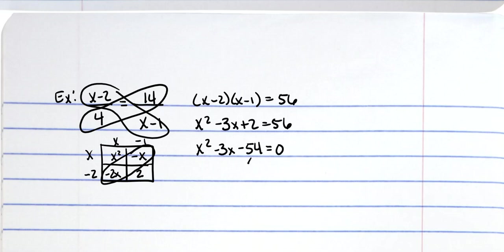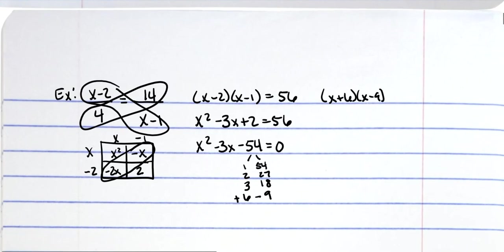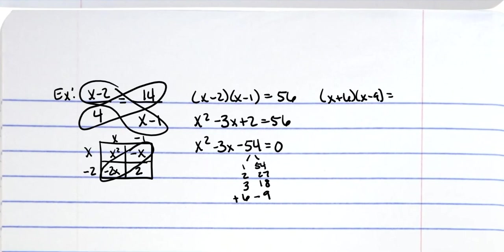Now we have to factor. So factors of 54 are 1 and 54, 2 and 27, 3 and—does 3 go in there? Yep, 3 goes into 24 eight times. 4 does not go in, 5 does not go in, 6 and 9. So how do I get negative 3 from all those factors? Well, negative 9 and positive 6 will give me that, so x plus 6 and x minus 9 is equal to 0.